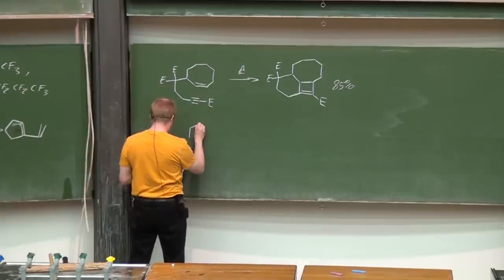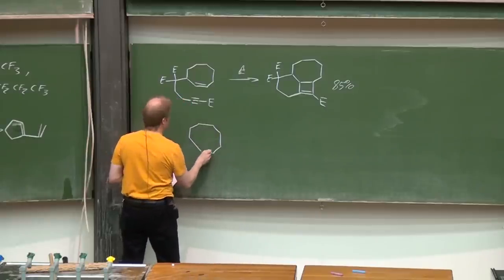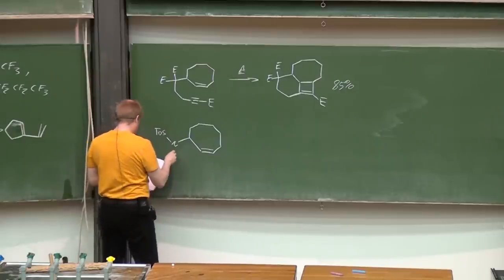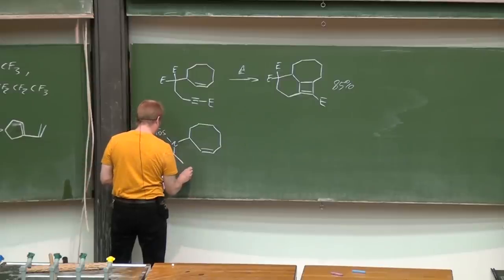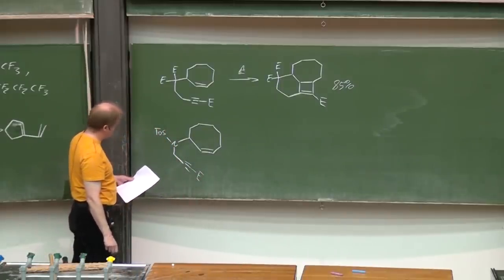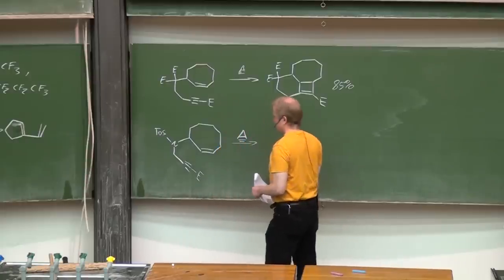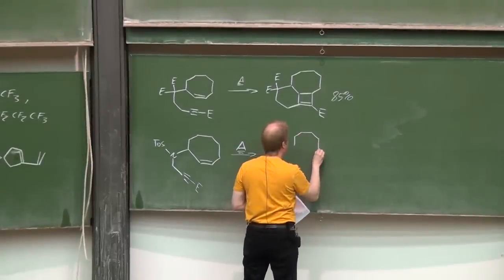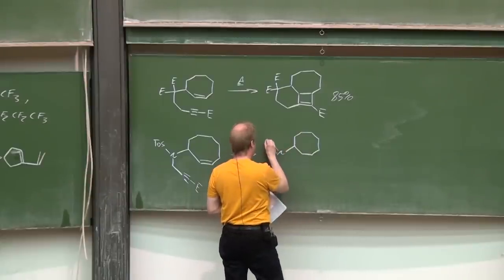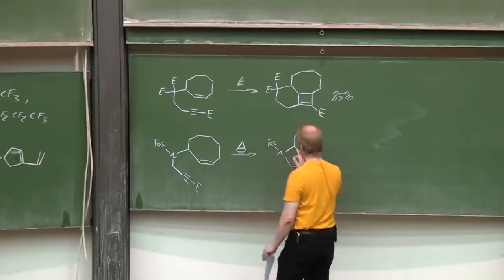So this type of product is formed: that means a four-membered ring here. And indeed that worked with an astonishing 85 percent yield. Next example, very similar, but now with a tosylated amino group and again that propargylic ester side chain.